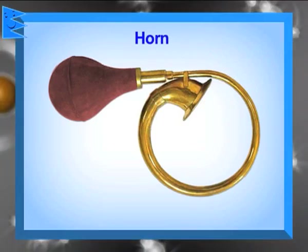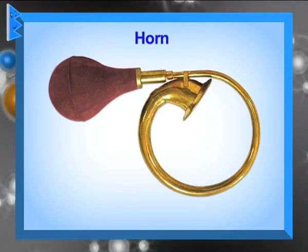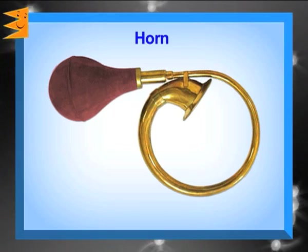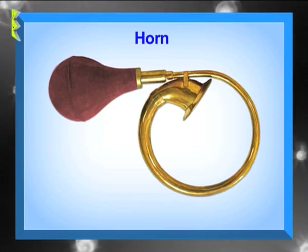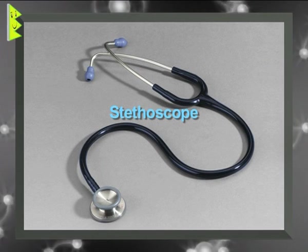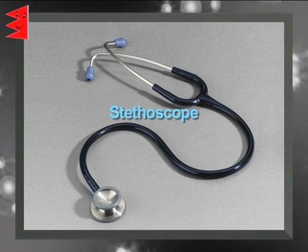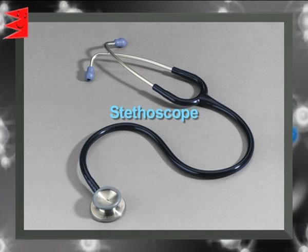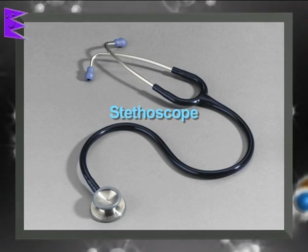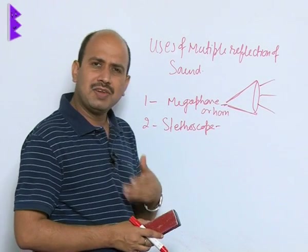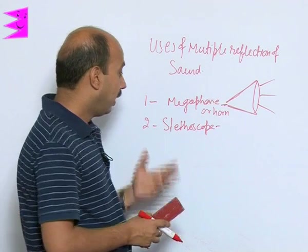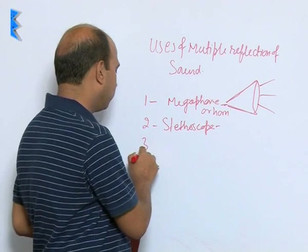We can also use a horn here — horns are also like this, where sound is produced and directed to one side. The second application is a stethoscope, which is used by doctors to hear the sound produced by heartbeats. Here also multiple reflections take place and ultimately the sound is heard.